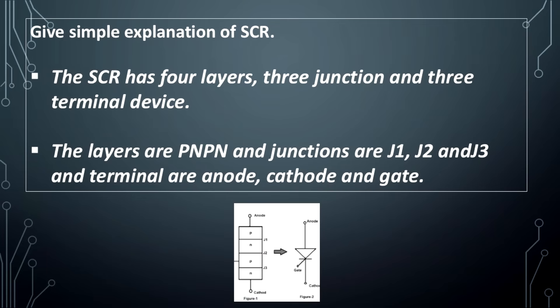Give a simple explanation of SCR. The SCR has 4 layers, 3 junctions, and 3 terminals. The layers are P-N-P-N and the junctions are J1, J2, and J3. The terminals are anode, cathode, and gate.